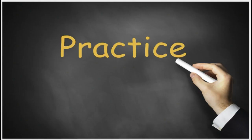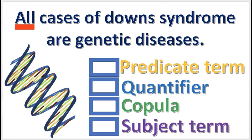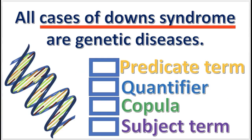Let's practice what we have learned so far. In this categorical proposition, what is the word 'all' called? Press pause if you need to. The answer will appear in 3, 2, 1. The quantifier. Next, what is 'cases of Down syndrome' called? Press pause. The answer will appear in 3, 2, 1. That's right — it's the subject term.